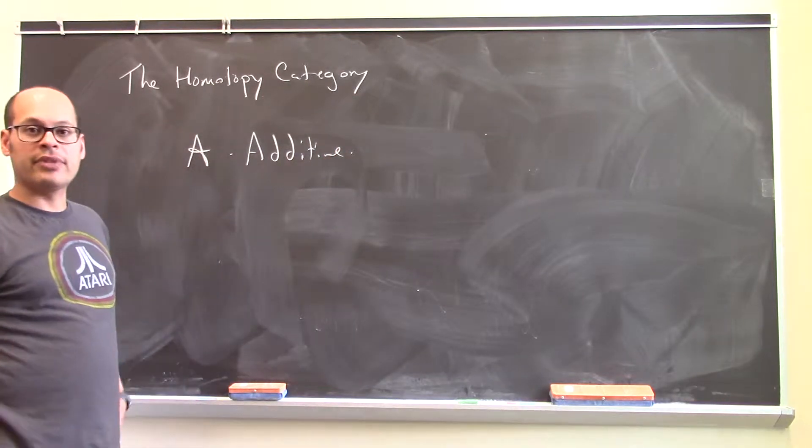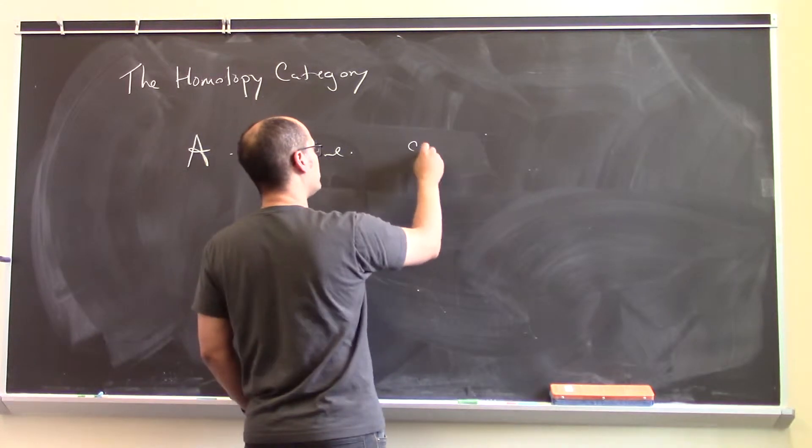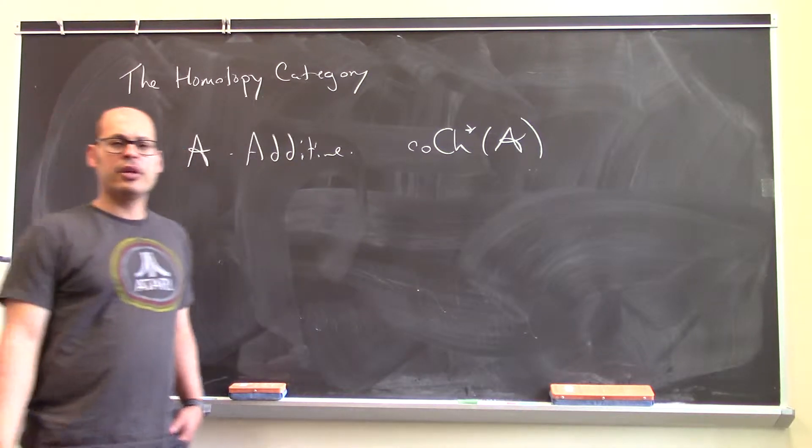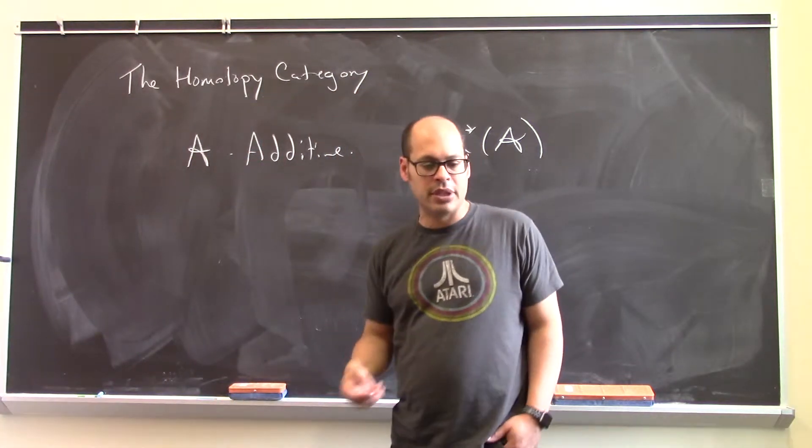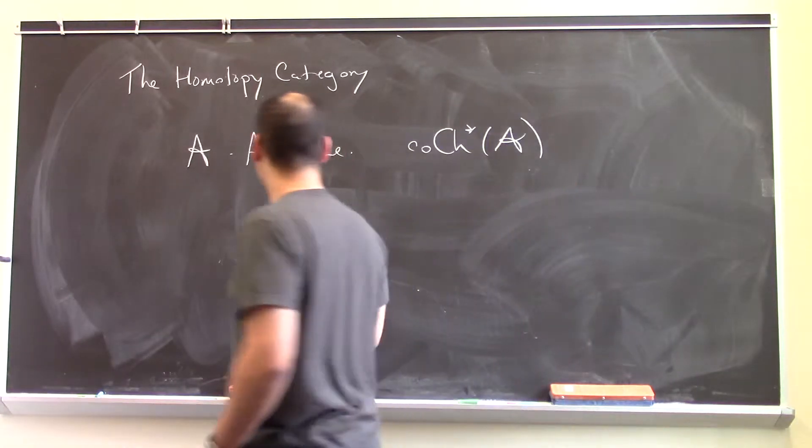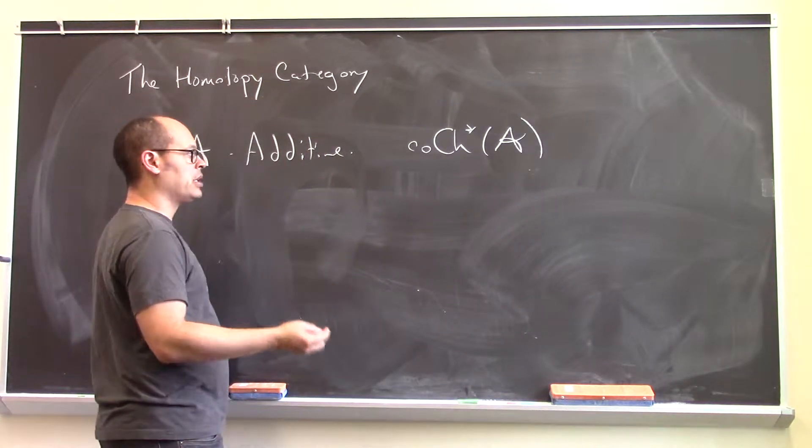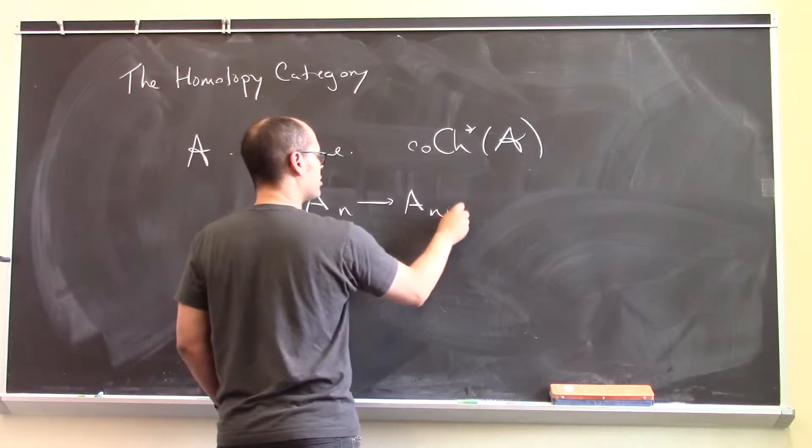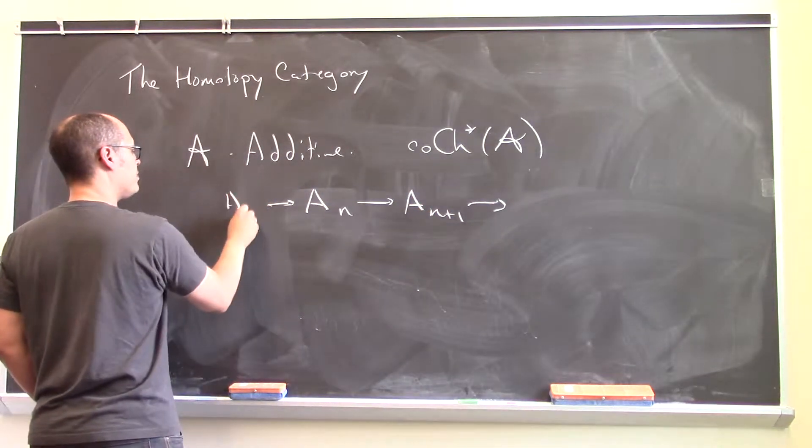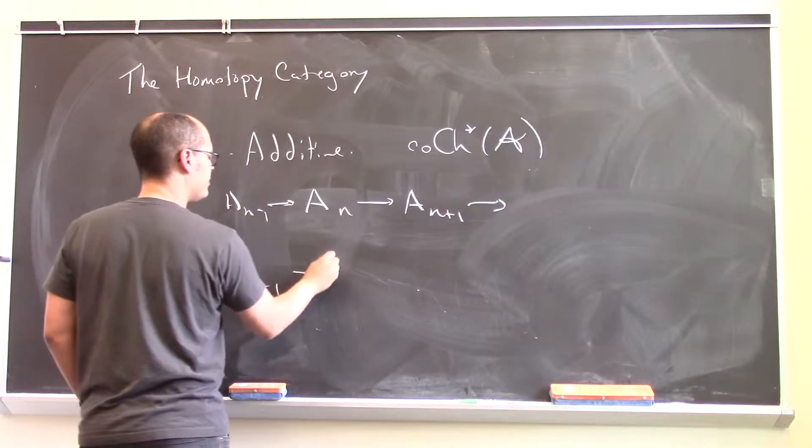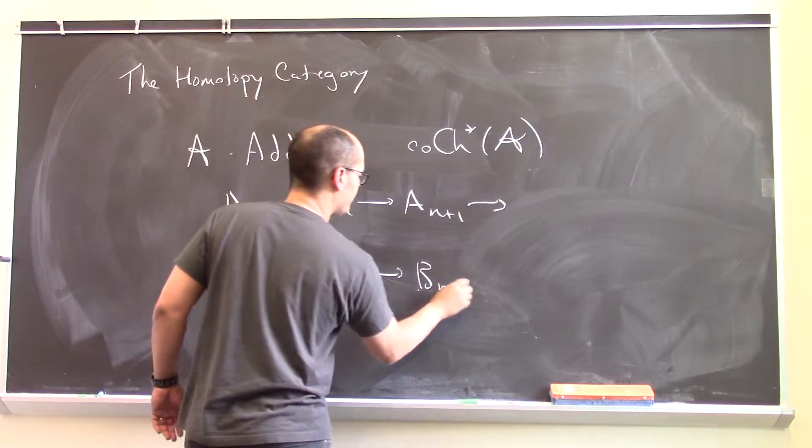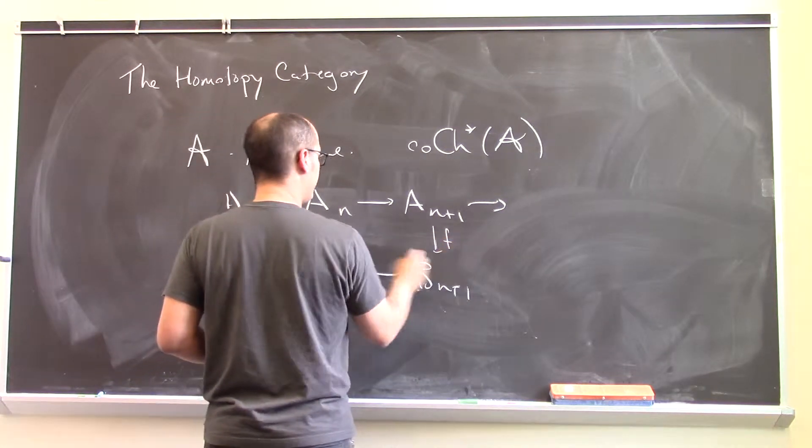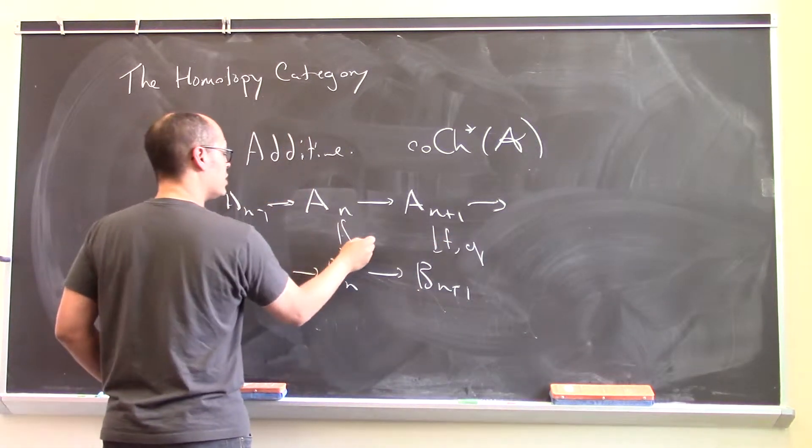So, starting with an additive category, as before, we can construct the category of cochain complexes. And in the category of cochain complexes, we can describe the property of maps between chain complexes being homotopic. So, if I have a cochain complex, like so, and another one, and if I have a couple of chain maps between them, so maybe some f and g, f and g, etc.